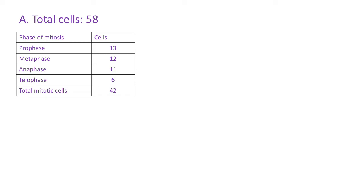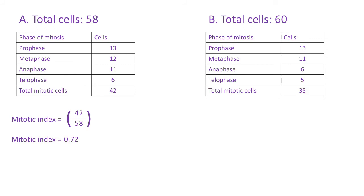For A, there were 58 cells in total, 42 undergoing mitosis, so your calculation should have been this and your answer. For B, 60 cells in total, 35 undergoing mitosis, the calculation and answer. For question three...